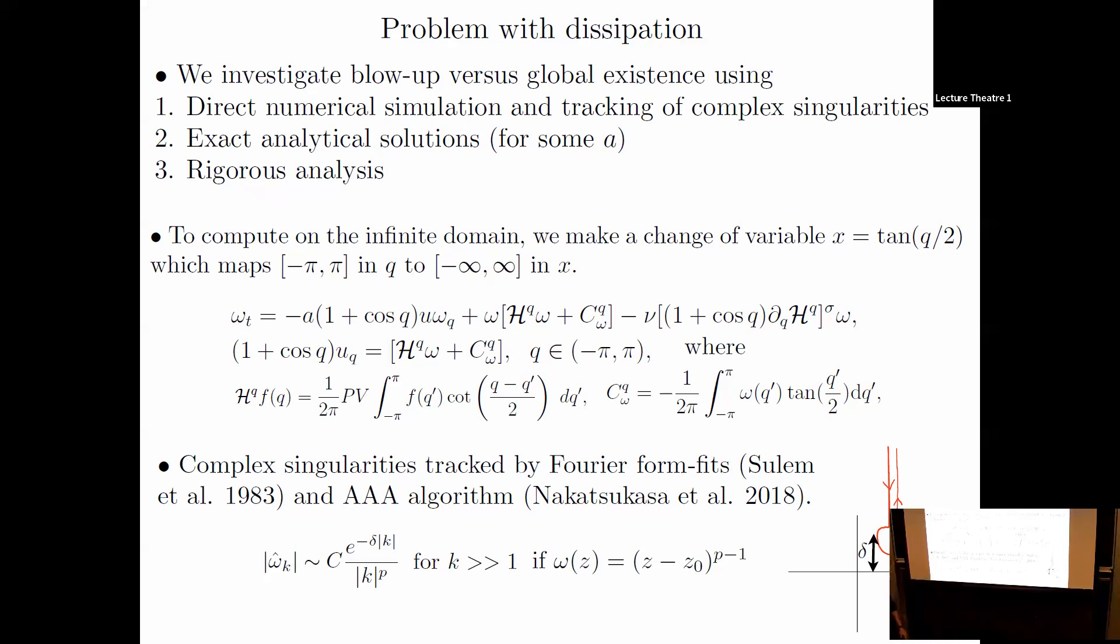As part of our numerics, we track complex singularities. It's hard to tell if something blows up in finite time or infinite time, and it's hard to characterize singularities. We use the asymptotic decay of the Fourier spectrum. If your function has a complex singularity at distance delta from the real line with power P, then Fourier coefficients decay exponentially with delta. When delta reaches zero, the singularity occurs in your solution. We also use the AAA algorithm due to Trefethen and collaborators for complementary information.